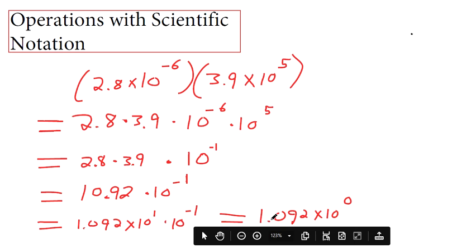So, it's 1.092. Or, in scientific notation, 1.092 times 10 to the 0.